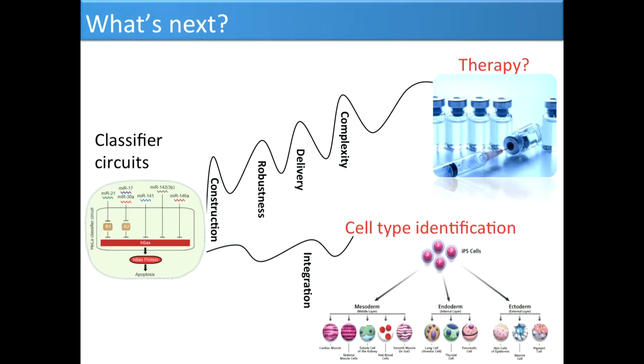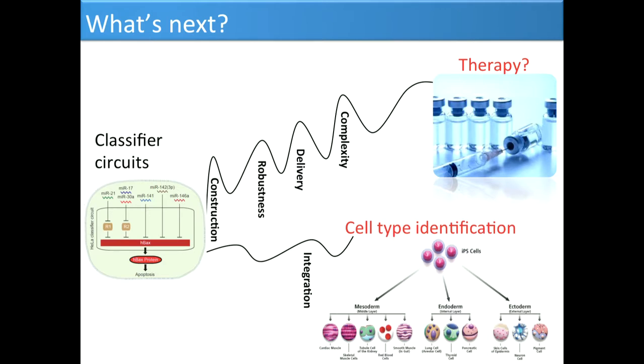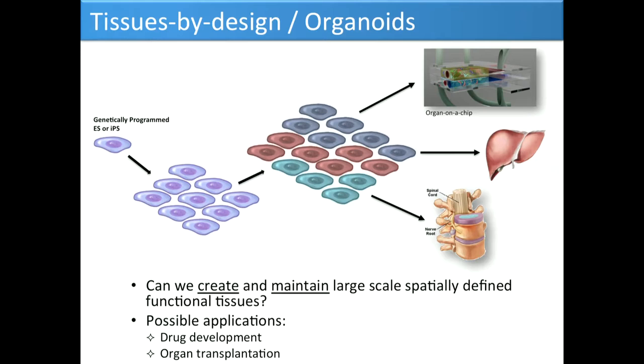Cell type identification is another area where we can use these microRNA sensors. The last project I'll briefly talk about is organoids. This has been interesting from the beginning: can I program stem cells to differentiate into any kind of tissue I want — any kind of organoid, any organ? Starting with IPS cells or embryonic stem cells, then programming them to differentiate, make patterns, and can we initially create an organ on a chip — on a microfluidic chip by design?